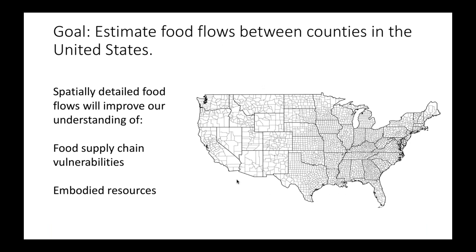The goal of this talk and this paper is to model or estimate food flows between all counties in the US. We want to do this for two main reasons. First, these spatially detailed food flows will improve our understanding of the food supply chain in the US — once we have a more refined understanding of where food is moving, we can better determine where it's vulnerable to disruptions, whether it's resilient in certain places, and what infrastructure is critical to supporting food flows. This is pretty rare because most food supply chain data is very coarse in spatial resolution — typically between countries.